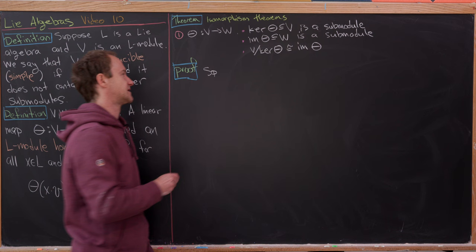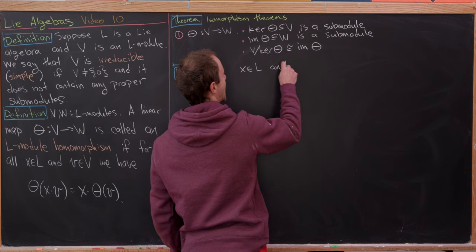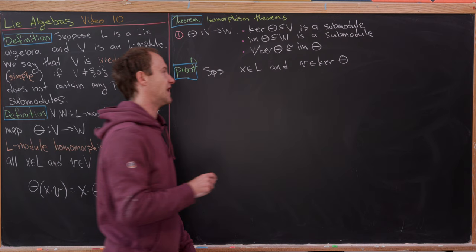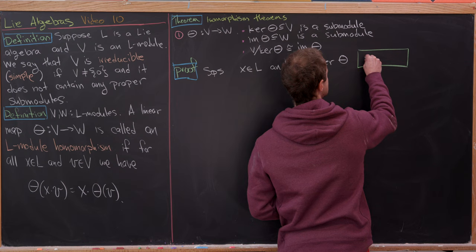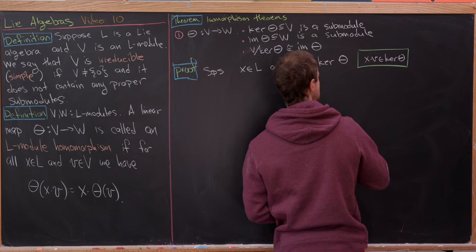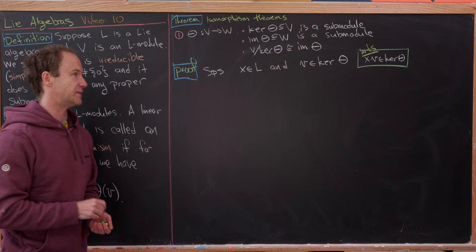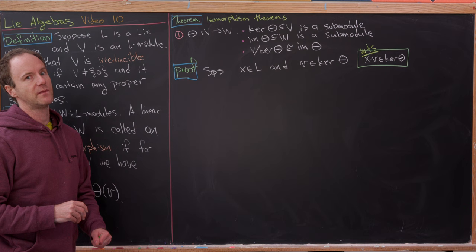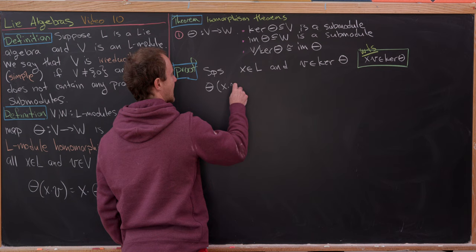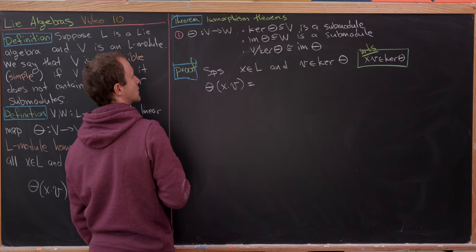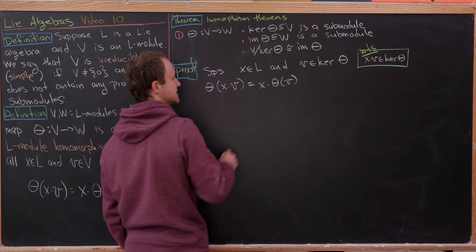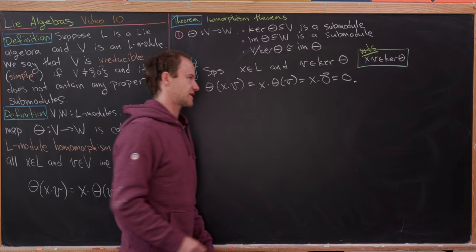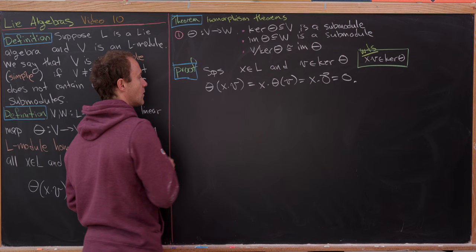Suppose x is in L and v is in the kernel of θ. We need x·v to also be in the kernel. Look at θ(x·v): since θ is an L-module homomorphism, this equals x·θ(v). But v is in the kernel, so θ(v) = 0, giving x·0 = 0. That's exactly what we need for x·v to be in the kernel, so ker(θ) is a submodule.